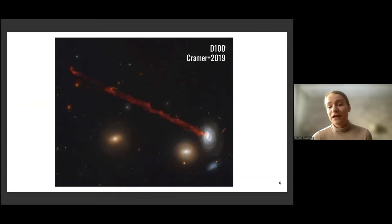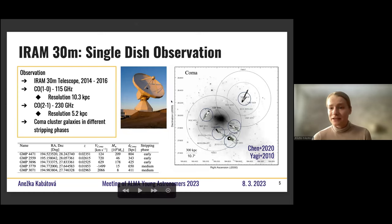And ram pressure stripping cannot strip them out of disks of galaxies. So you can see that the galaxy is perfectly fine in visible light. And then if you just go to H-alpha, you can see this beautiful stream of gas that's stripped from the galaxy by the ram pressure stripping.